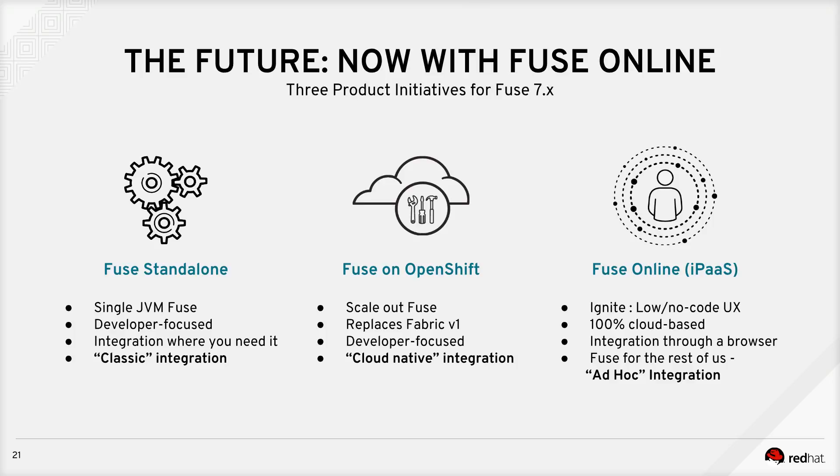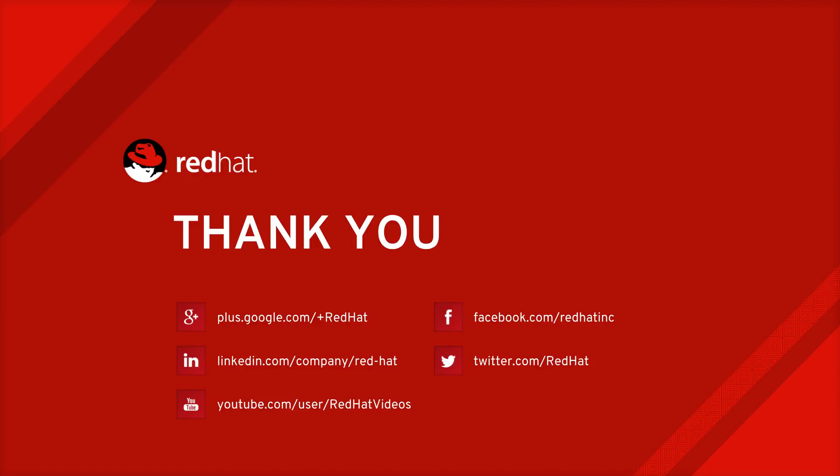Finally, JBoss Fuse for agile integration supports all styles of implementation — whether it's standalone classic integration, running on containers in a cloud-native manner using Fuse on OpenShift, or running it as an iPaaS hosted integration platform as a service with zero-code or low-code development. All of these are possible. The primary innovation under the same coming from open source using Apache Camel is the same, but you get to utilize it in various flavors. I hope this presentation and demo was useful for you. Thank you for listening, and have a great day.